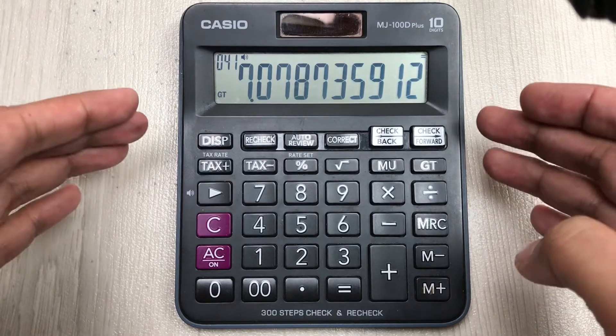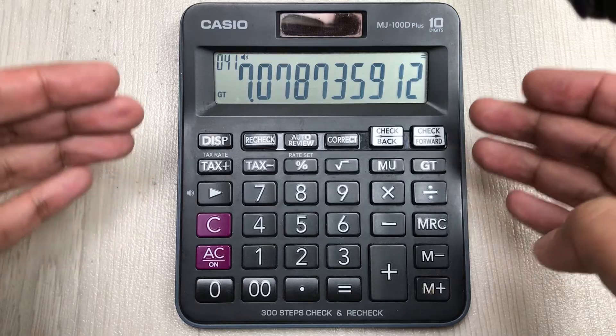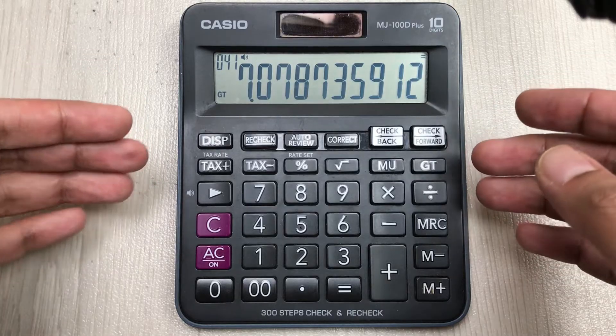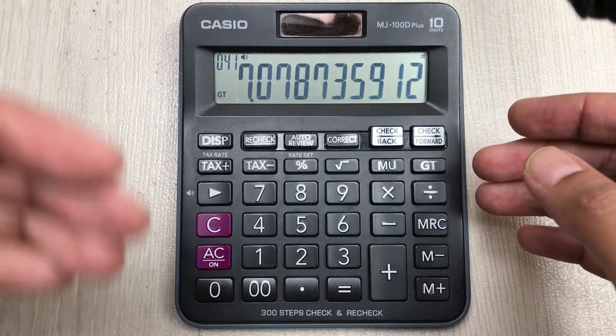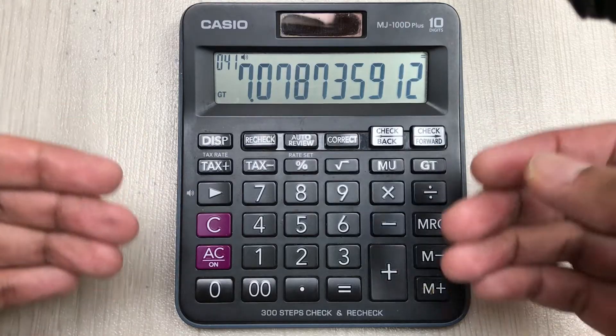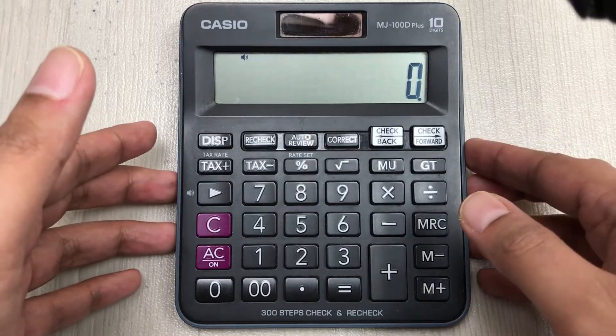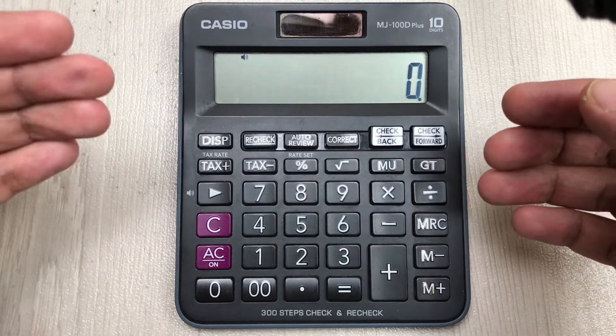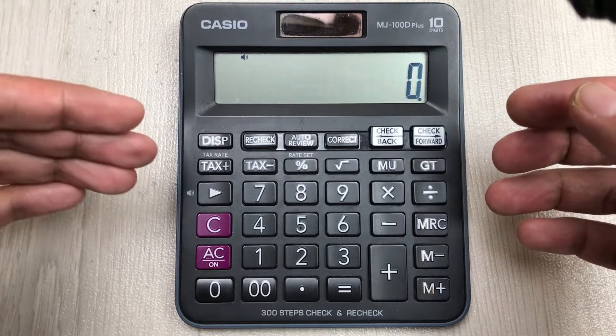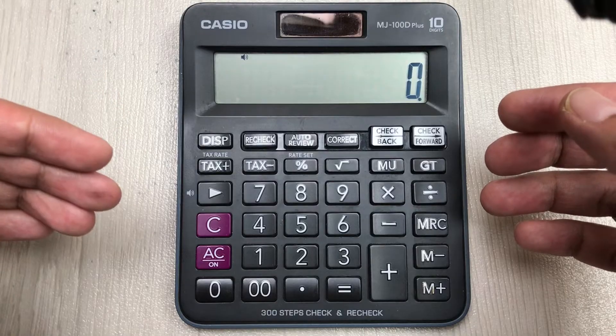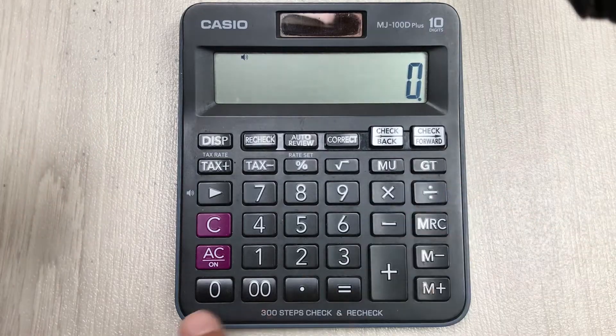This was our first method, let's move to the second method. I will clear everything. Let's say again I will use the same example of 0.850. In the first step I will type 0.850.